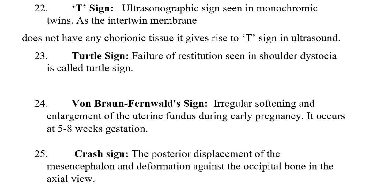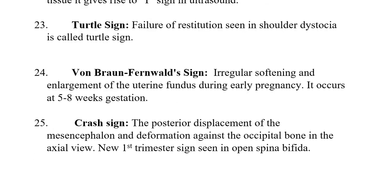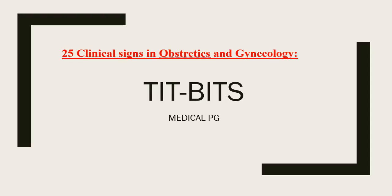T sign is also an ultrasound sign seen in monochorionic twins — as the inter-twin membrane does not have any chorionic tissue, it gives rise to the T sign on ultrasound. Traction sign is failure of restitution seen in shoulder dystocia. Von Braun Fernwald sign is irregular softening and enlargement of the uterine fundus during early pregnancy, occurring around five to eight weeks of gestation. Crash sign is a new first-trimester ultrasound sign seen in open spina bifida — it refers to posterior displacement of the mesencephalon and deformation of the occipital bone in the axial view.